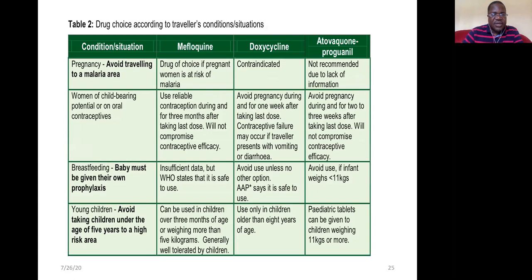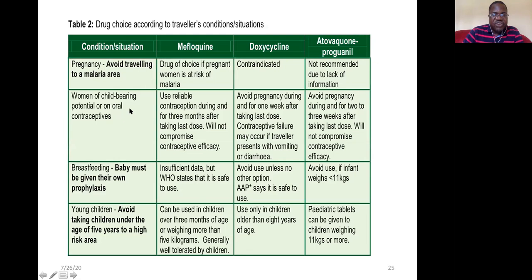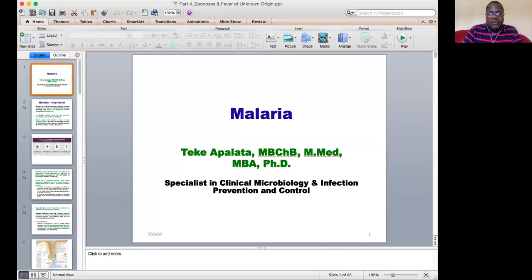For pregnant women, the drug of choice is mefloquine, since doxycycline is contraindicated and atovaquone-proguanil lacks sufficient safety data. Mefloquine is also suitable for women of childbearing age. For breastfeeding women, WHO suggests mefloquine based on limited data. Young children under five and pregnant women should be kept away from malaria-endemic areas. Thank you for following this presentation — you can post questions in our channel and we will answer them.